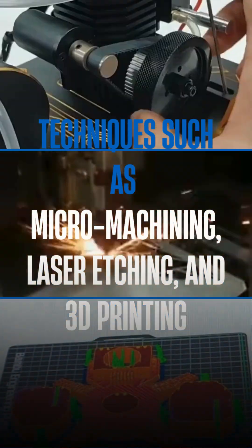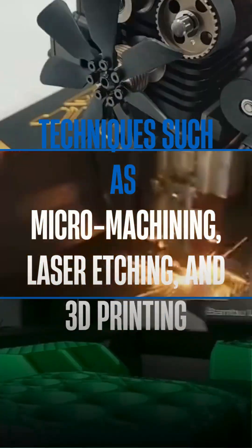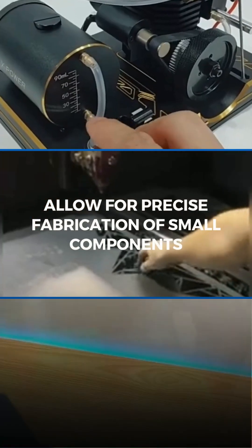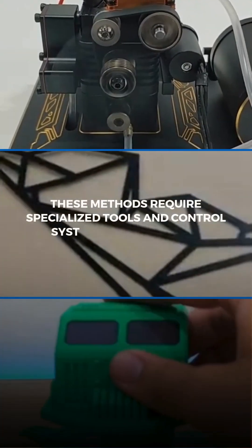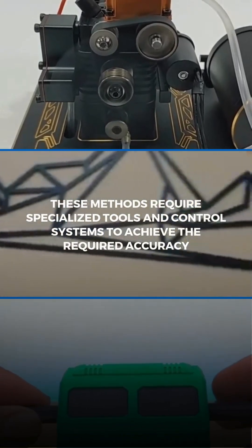Techniques such as micro-machining, laser etching, and 3D printing allow for precise fabrication of small components. These methods require specialized tools and control systems to achieve the required accuracy.